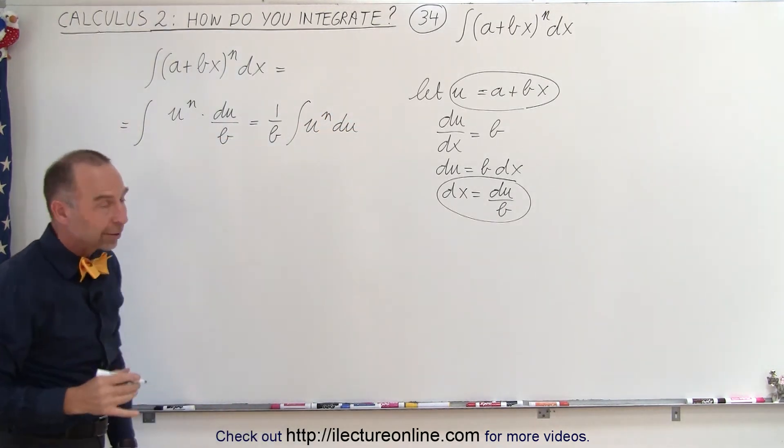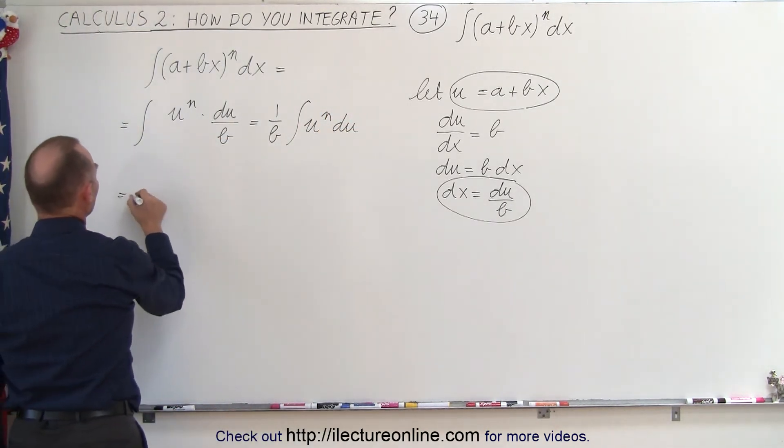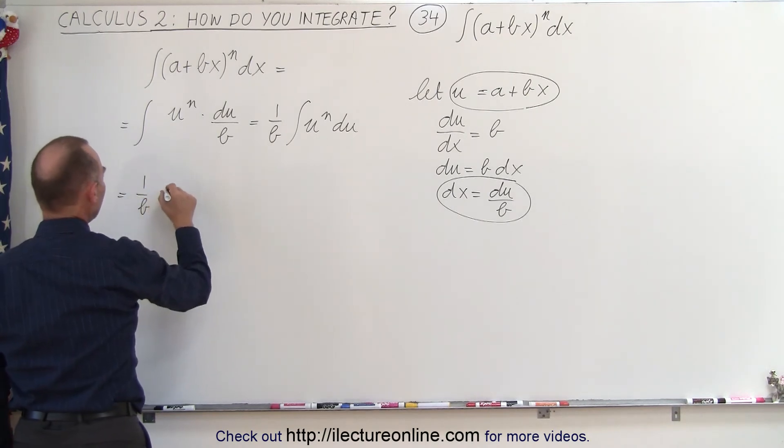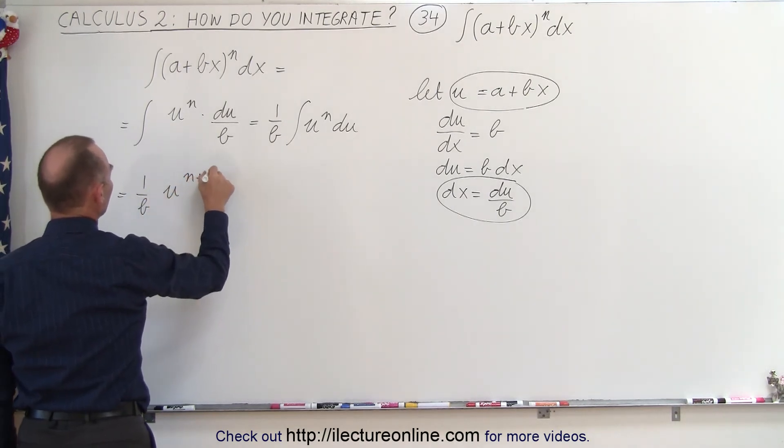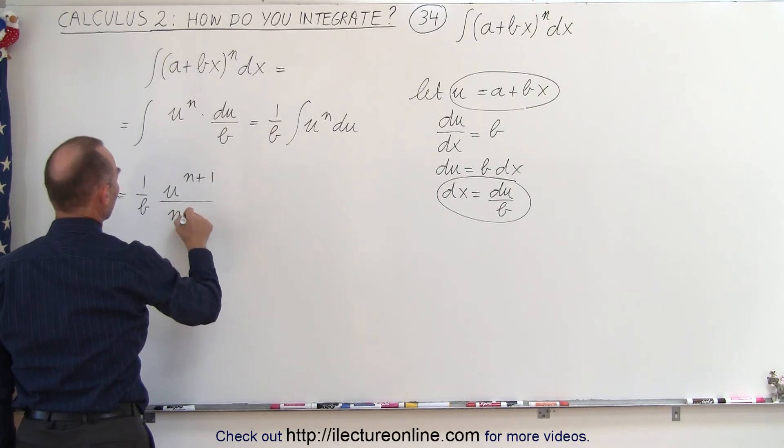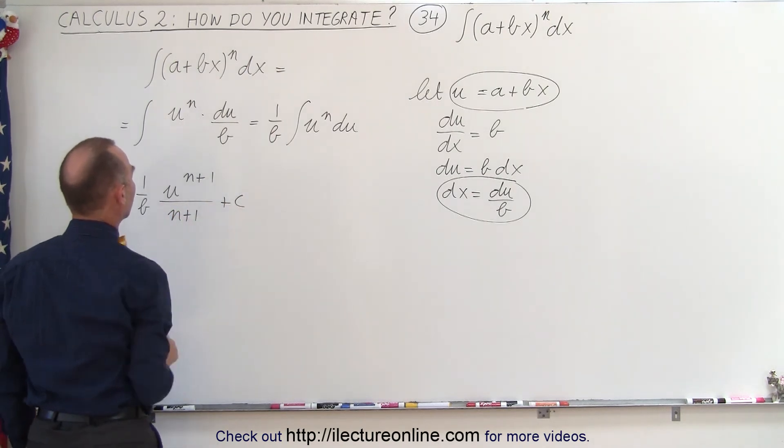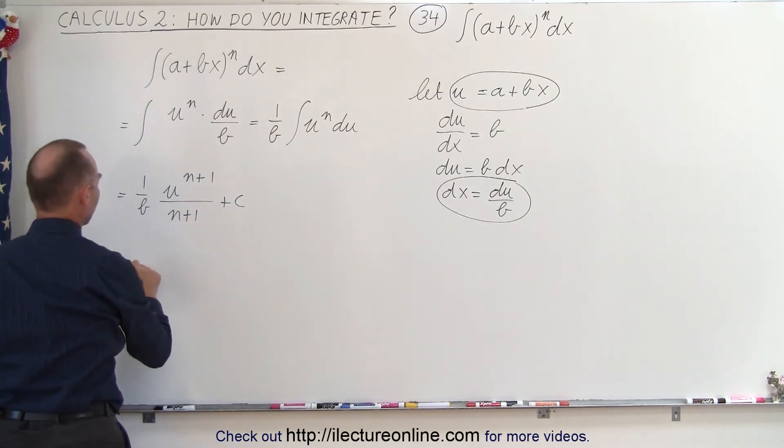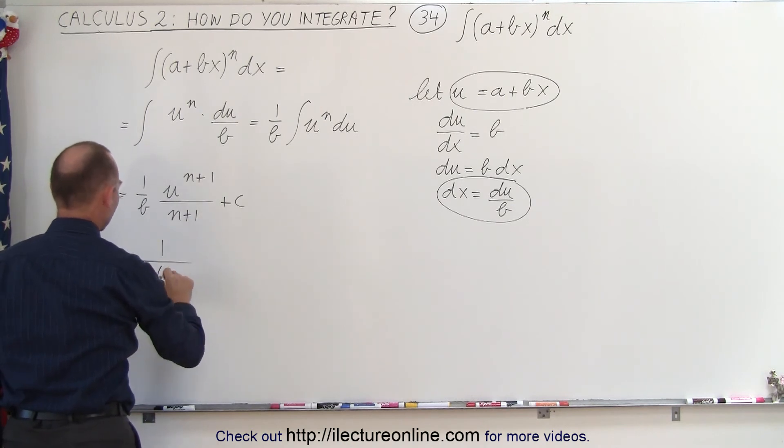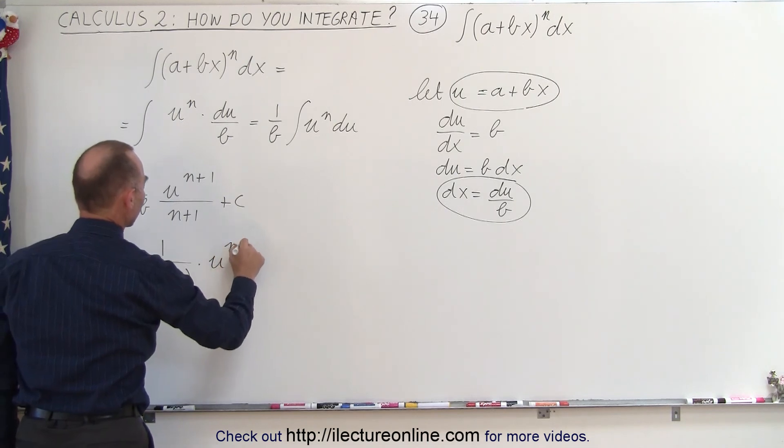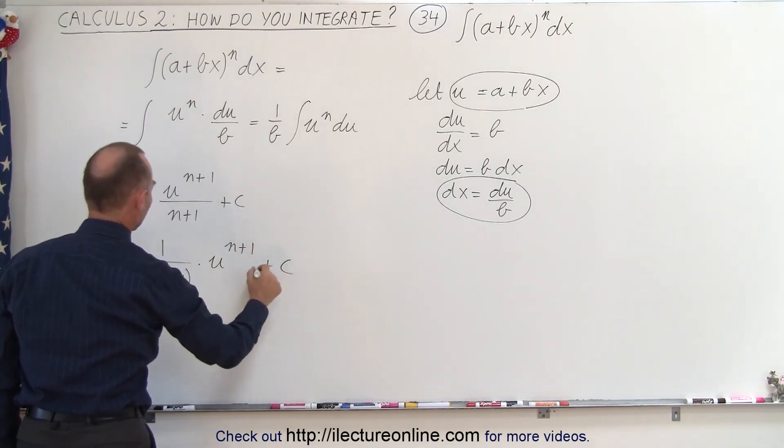And that of course is a very easy integral to do, so this becomes equal to 1 over b times u to the n plus 1, divided by the new exponent n plus 1 plus the constant of integration, which means that this is equal to 1 over b(n+1) times u to the n plus 1 plus a constant of integration.